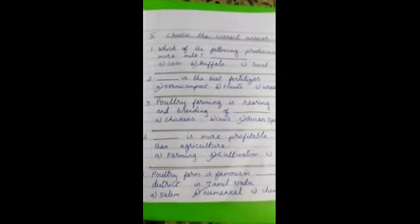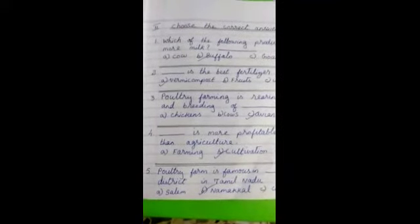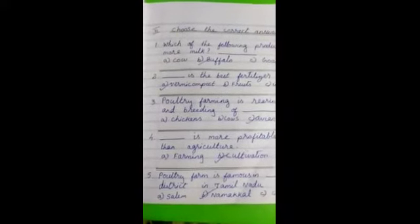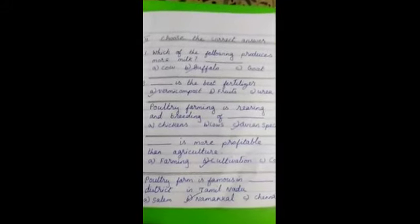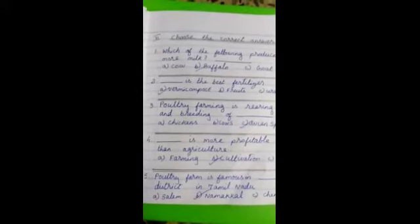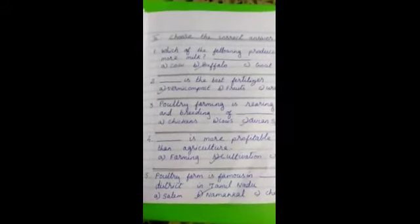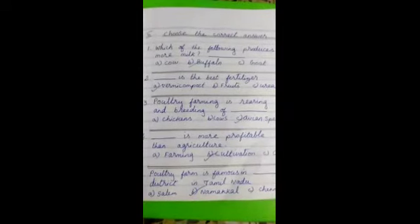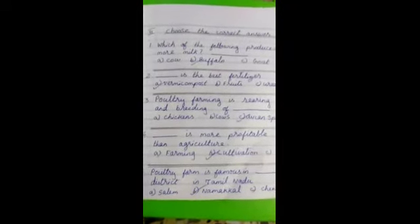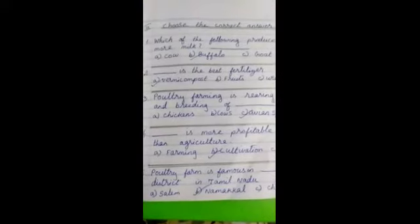And fifth one, poultry farms are famous in dash district in Tamil Nadu. A, Salem. B, Namakkal. C, Chennai. Answer B, Namakkal. You are finished writing it now. Five, choose the correct answer. After finishing one, put the lines and then turn the page.